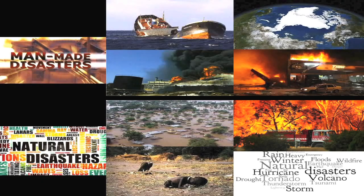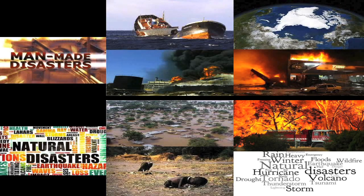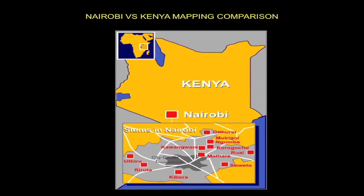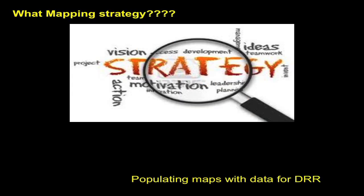Before I talk about how we are going to do it, I want to talk about why we will do it. When disasters happen, specifically in Africa, in Kenya, most of the times you don't have the data needed to do the response. We all know that the simplest tool for a response is a map. This shows the level of detail in Kenya, and compared to Nairobi, the level of detail in Nairobi is much higher than the level of detail in the rest of Kenya.